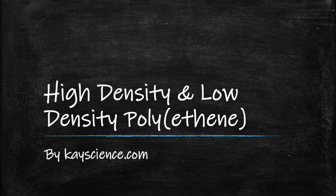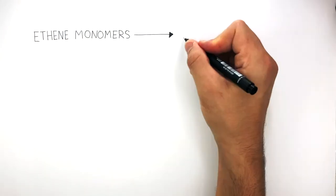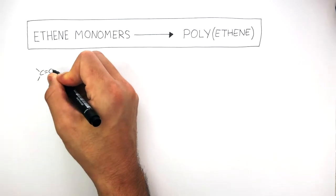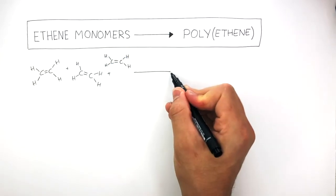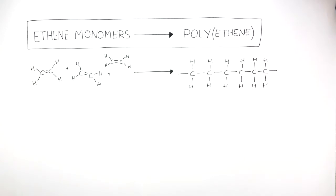High-density and low-density polyethene by kscience.com. Ethene monomers are able to form polyethene in the chemical reaction addition polymerization. These three ethene monomers represent the thousands of ethene monomers which can react together to form the long-chain polyethene.